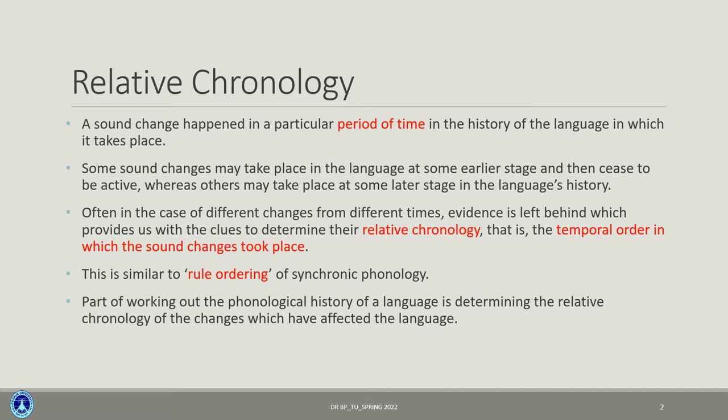Relative chronology is more or less similar to rule ordering in synchronic phonology. If you remember, rule ordering is of four types: feeding, bleeding, counter-feeding, and counter-bleeding. So relative chronology is conceptually related to the rule ordering that we learned in synchronic phonology.